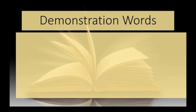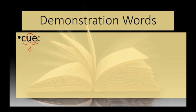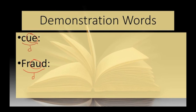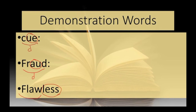In this lesson, we have three demonstration words. The first is cue — it's one syllable. I'm going to circle the UE because it's a double vowel sound and write a D underneath. My next word is fraud — again, only one syllable. I see AU, which makes the AW sound, and that's a double vowel sound. My last word is flawless — two syllables. Less is our suffix ending, so I circle that as a suffix. Then I circle AW and put a D underneath to show the double vowel.